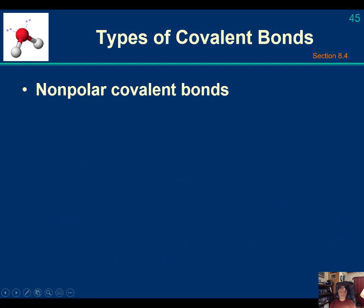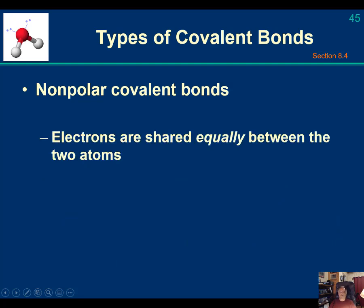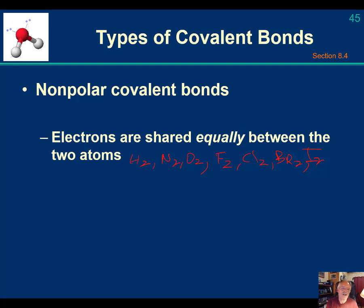Types of covalent bonds: you've got nonpolar covalent bonds where electrons are shared equally between two atoms. These are molecules like H2, N2, O2, F2, Cl2, Br2, and I2. All these diatomic molecules have nonpolar covalent bonds.